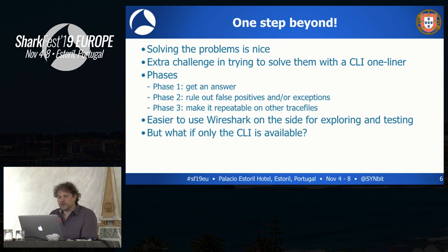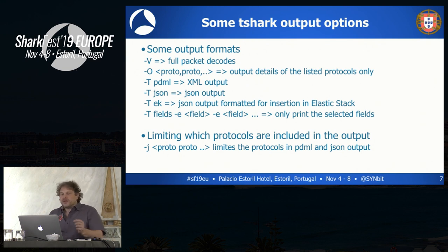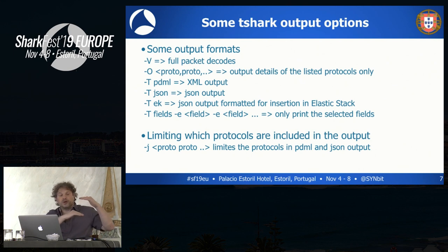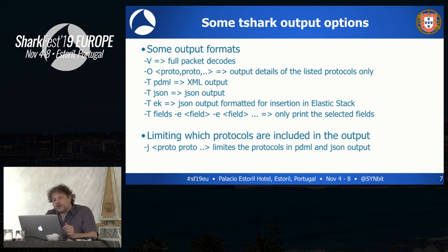Let's look at a couple of T-Shark options that can help you. Who uses T-Shark regularly? Quite a few people. Who has never used T-Shark before? Good, welcome — I hope after this session you will be using T-Shark. Some of the output formats can be really handy. The minus capital V will show you a full packet decode — basically when you expand all the packet details. If you're only interested in a couple of fields, instead of minus V you can use minus O, and then add the protocols you want expanded; the rest will be collapsed. Those are for human-readable format.